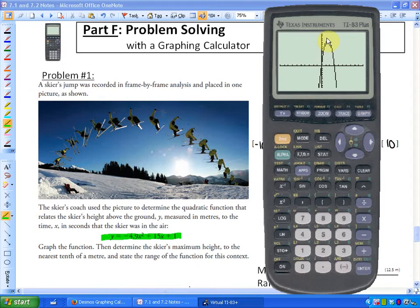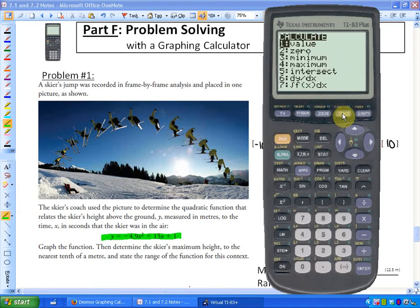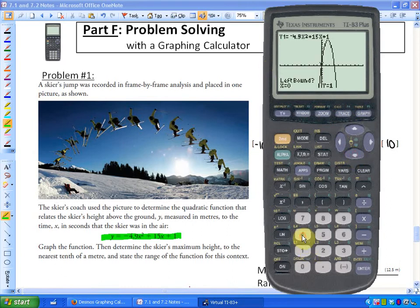Now the two things we want to find are the maximum height and the range of this particular jump. So in this particular time the maximum height is going to be, and that's the vertex, so we press second and then trace. The maximum height is a maximum so that vertex is a maximum so I'm going to press four and it's going to ask me three questions. A left boundary, so go anywhere to the left of the vertex, this is to the left of the vertex, hit enter.